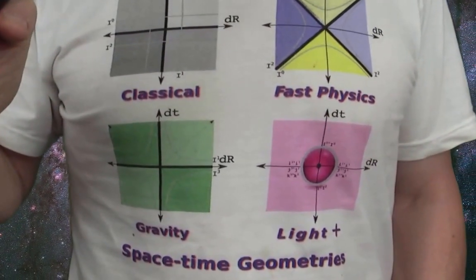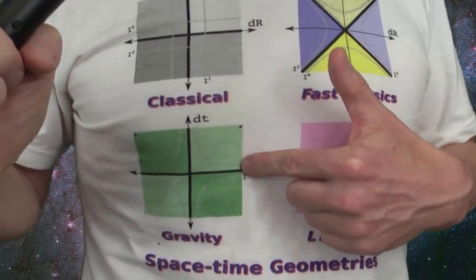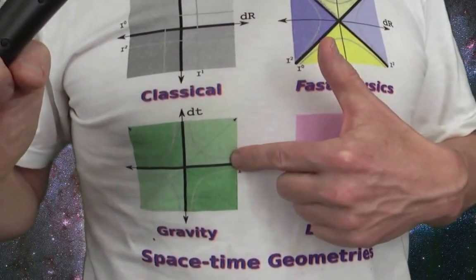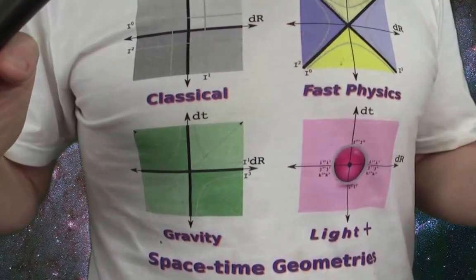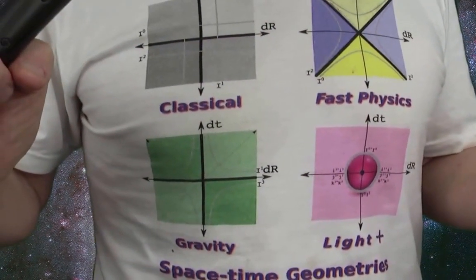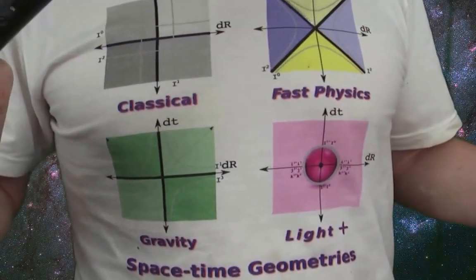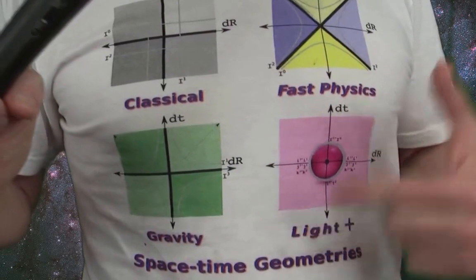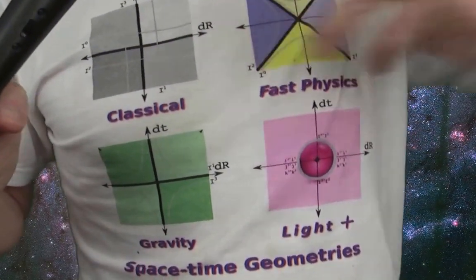So, let's just think about this green graph down here. Because the green graph basically is the classical graph, but where we respect the speed of light. So that's why we got the whole bendy thing going on.